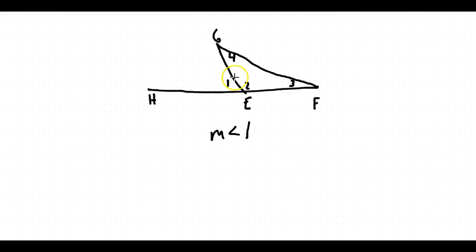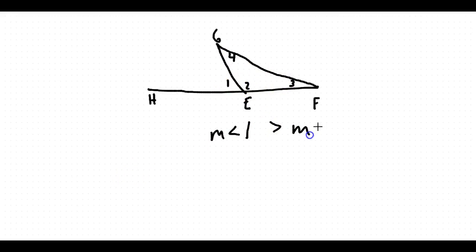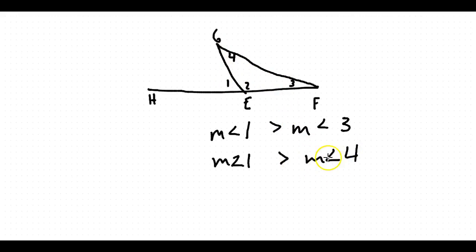Looking at the measure of angle 1 — angle 1 has to be greater than which two angles? Based on our Exterior Angle Theorem, angle 1 has to be greater than angle 3 and also greater than angle 4. They just asked it backwards — they asked which two angles are less than angle 1, which is the reverse of that.